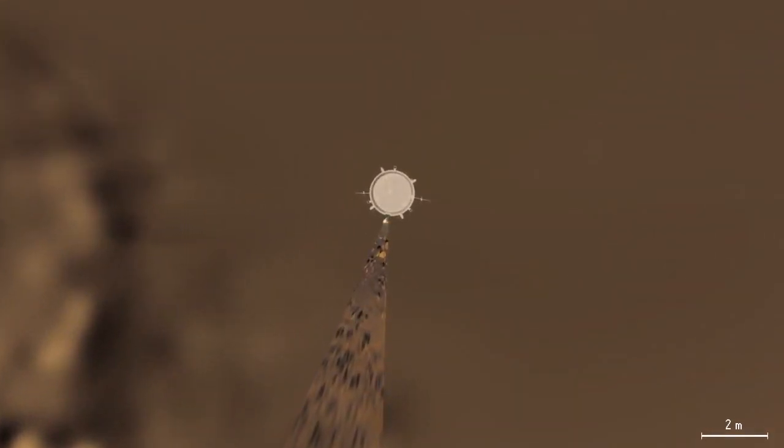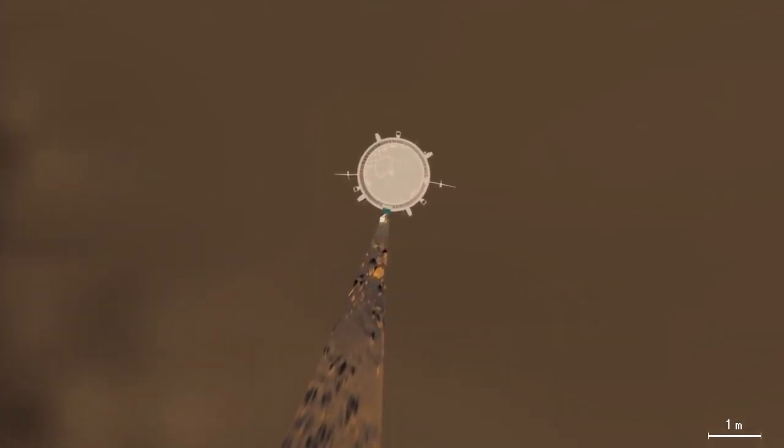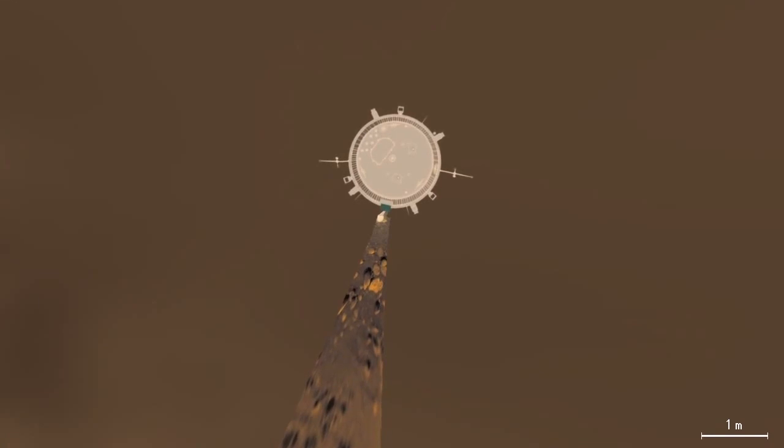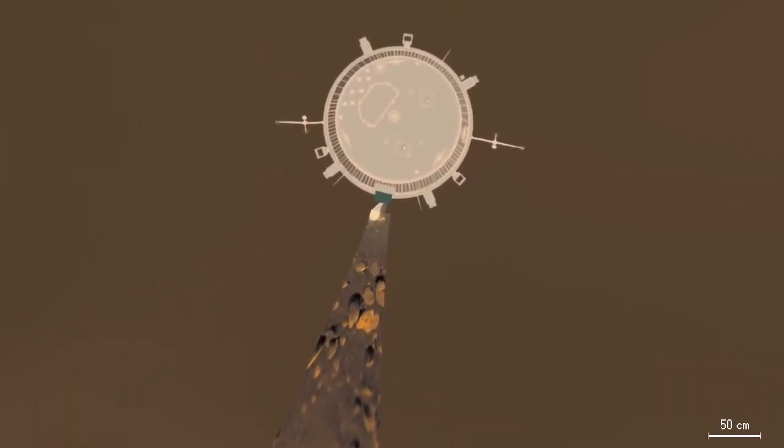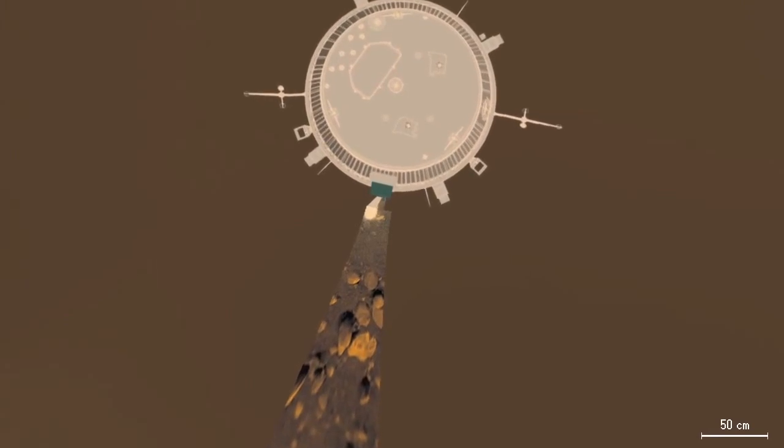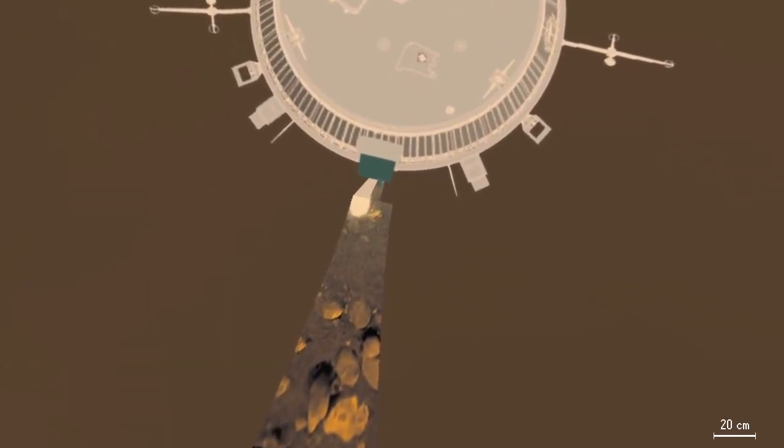The Descent Imager Spectral Radiometer is the dark green instrument at the south side of the Huygens probe. Its lamp illuminated the surface, allowing spectral analysis. The lamp's spotlight stands out brightly since days on Titan are even darker than cloudy days on Earth.